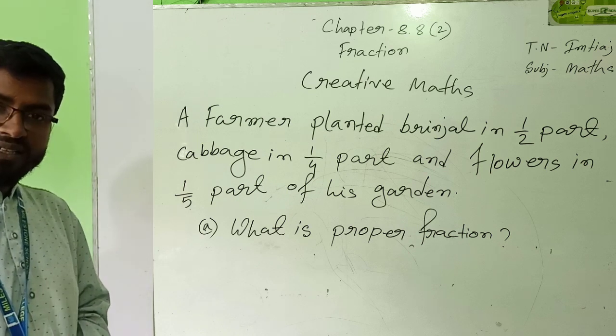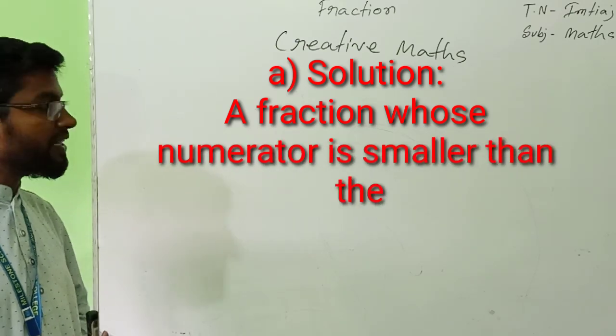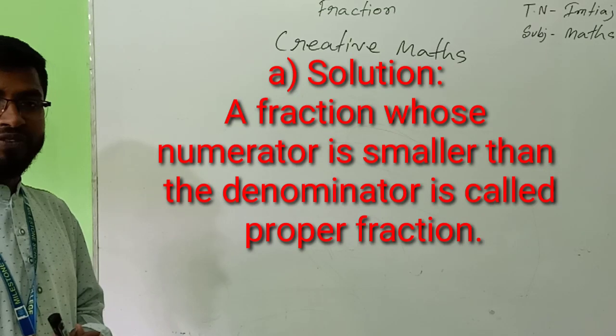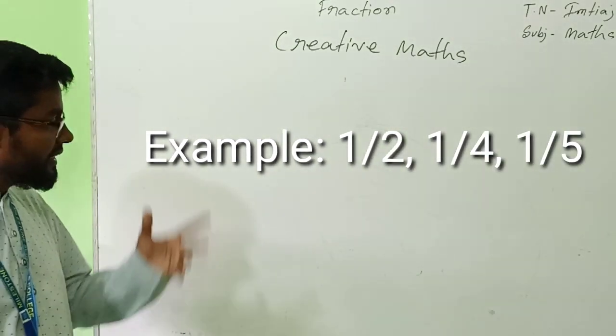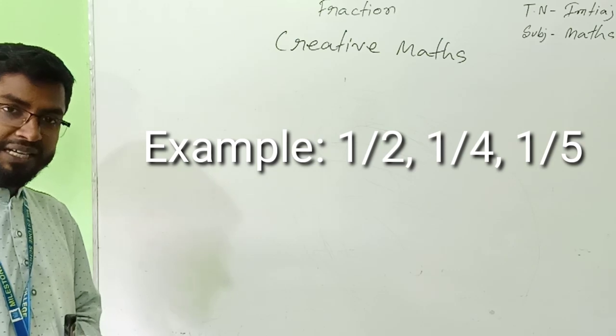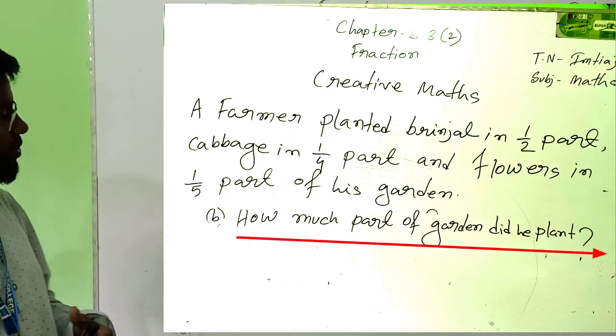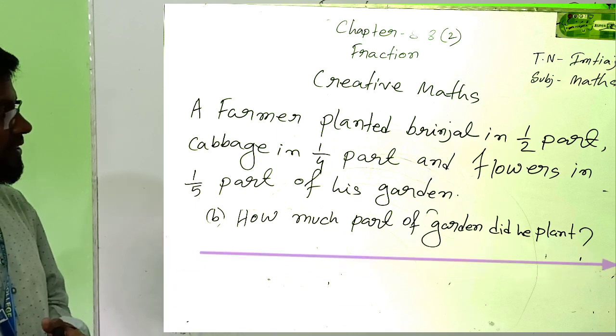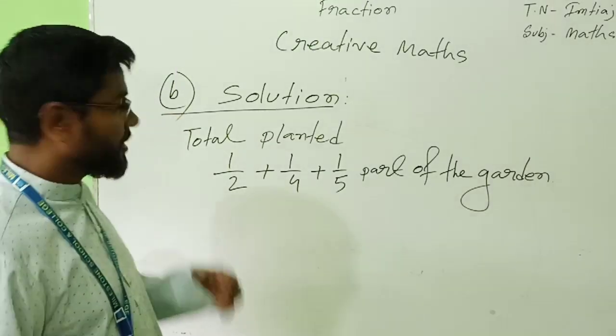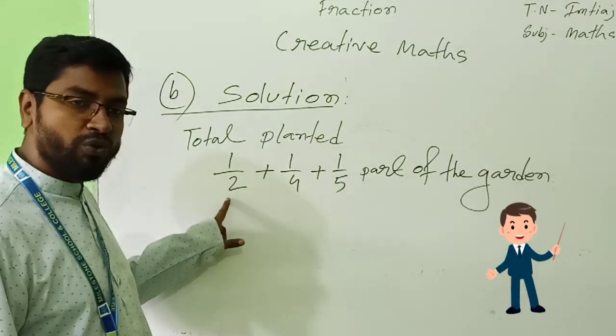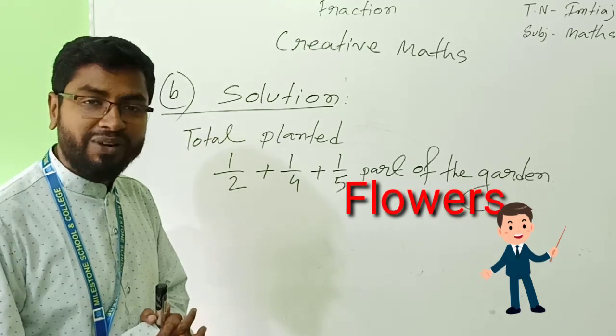See the question again: define proper fraction. So definition of proper fraction: the fraction whose numerator is smaller than the denominator, they are called proper fraction. So see the example: 1/2, 1/4, 1/5. These are the proper fractions.